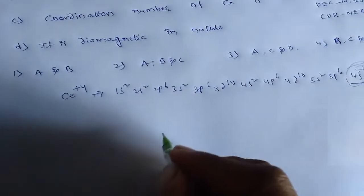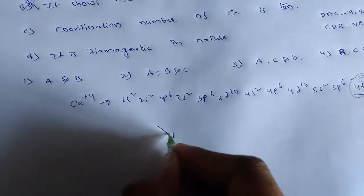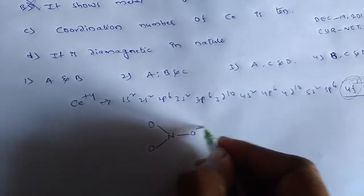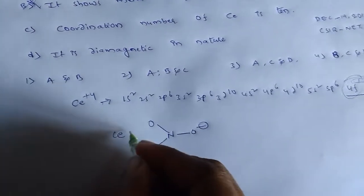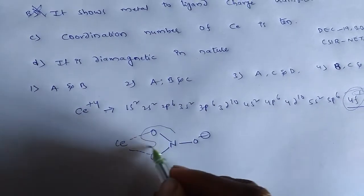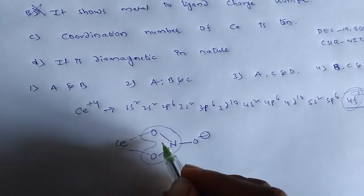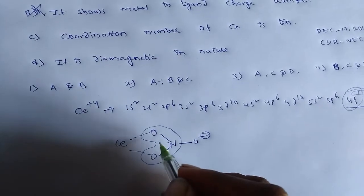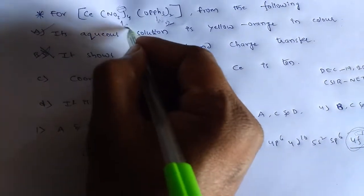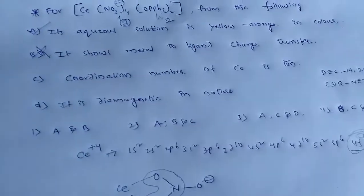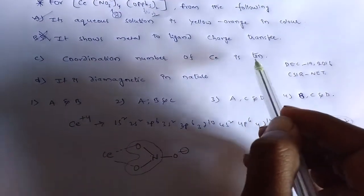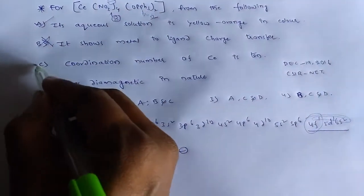Next, consider NO3. In this NO3, the possible formation is like this. So here this shows us that NO3 acts as bidentate ligand. Hence 4 NO3 means it coordinated with 8. So totally, 8 plus 2 is 10. So the coordination number of cerium is 10. So option C is right one.